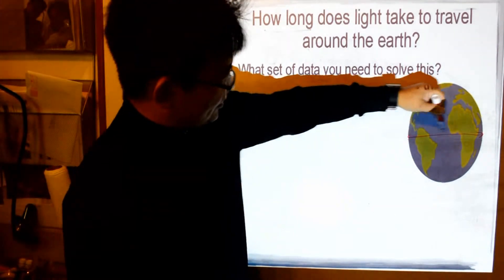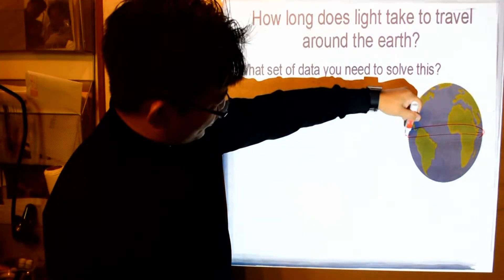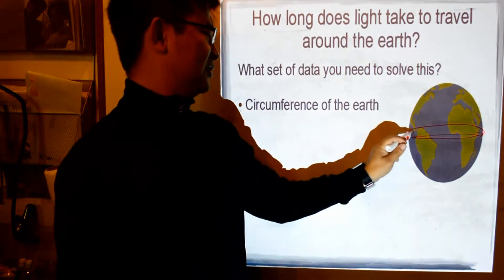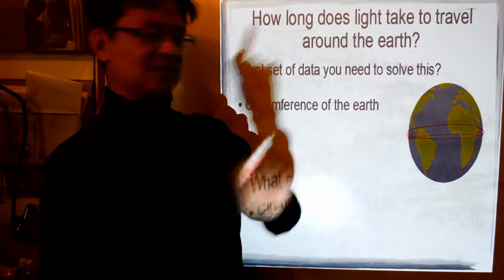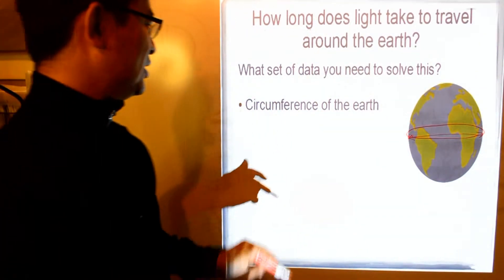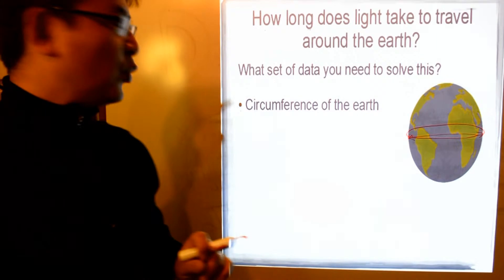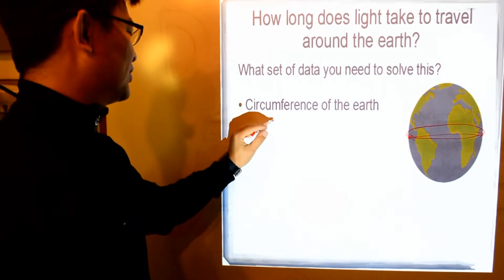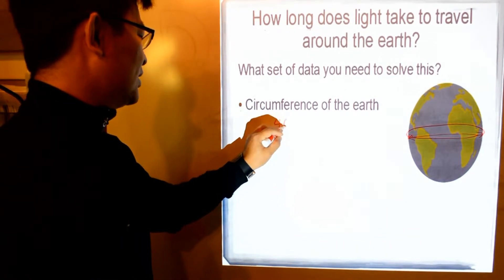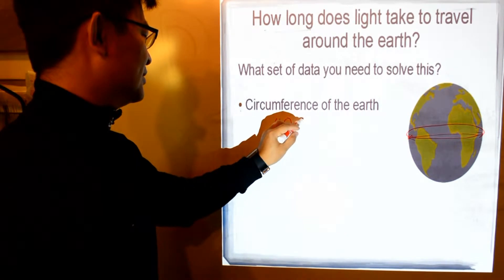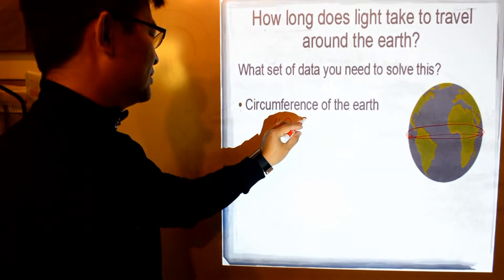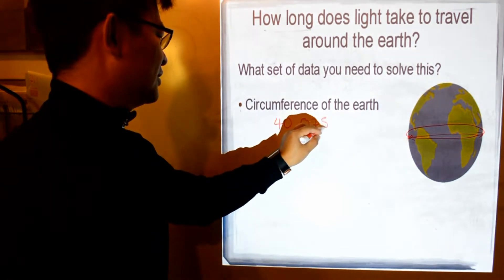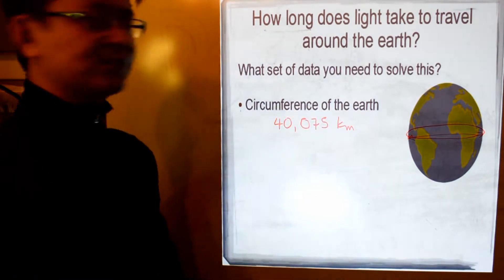And now I can't show it but it's actually around the earth. We'll take the equator. And at the equator, the circumference of the earth is about 40,075 kilometers.